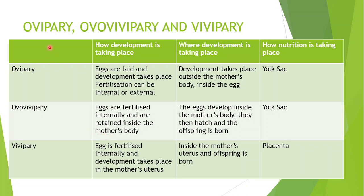We get to our three reproductive strategies: oviparous, ovoviviparous, and viviparous. We have three columns: how development is taking place, where development is taking place, and how nutrition is taking place. For oviparous: the eggs are laid and development takes place. Fertilization can be internal or external. Development takes place outside the mother's body, inside the egg — the mother lays the egg, development takes place inside that egg, and then the egg hatches. Nutrition takes place through a yolk sac inside the egg.